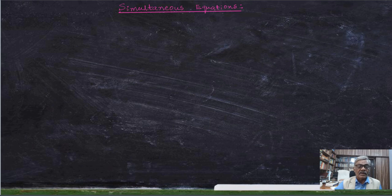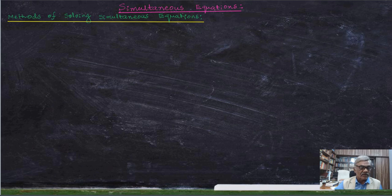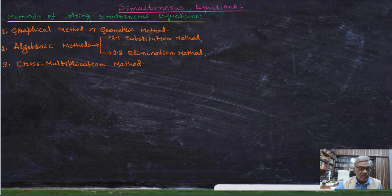We will discuss these by taking examples one by one in a general setup. Methods of solving simultaneous equations: there are mainly three methods — graphical or geometric methods, and algebraic methods. Within algebraic methods, there are two sub-methods: substitution method and elimination method. The third method is the cross multiplication method.